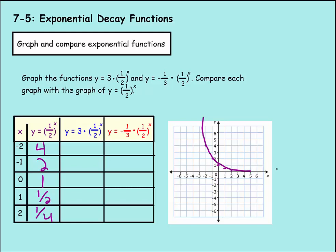These decay functions decay at a decreasing rate. Unlike exponential growth functions — which grew faster and faster — these decay functions slow down their decaying. We're cutting this in half over and over, and cutting away from less and less as we go on. It keeps getting smaller and smaller, but the amount of change becomes very minuscule, almost unnoticeable further out.